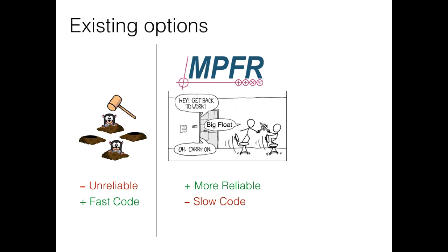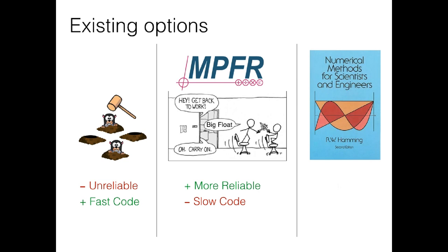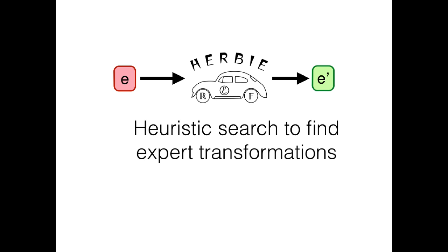So the only real option that a programmer who wants to eliminate rounding errors has is formal numerical methods. Now there's decades of work on this field, so you can go out, take a class, and become an expert in this topic, which gives you the tools necessary to diagnose and fix floating point problems. But gathering this expertise takes a lot of time and work, which is why my colleagues and I decided to build a tool, Herbie, which would use a heuristic search to find the same transformations that experts do, without requiring expertise on the part of the user.